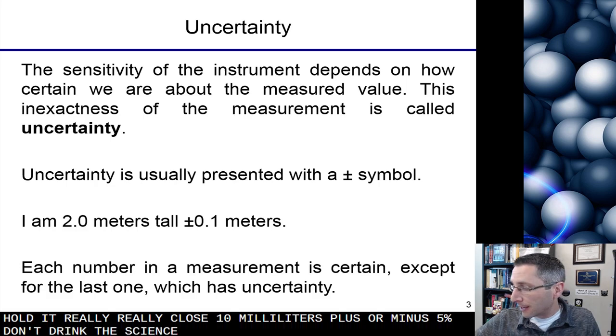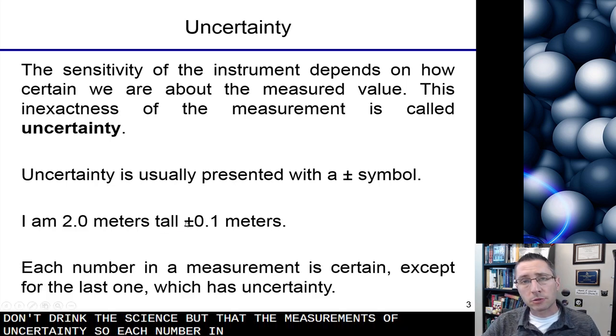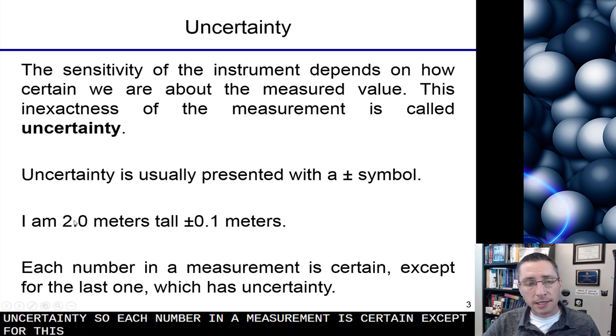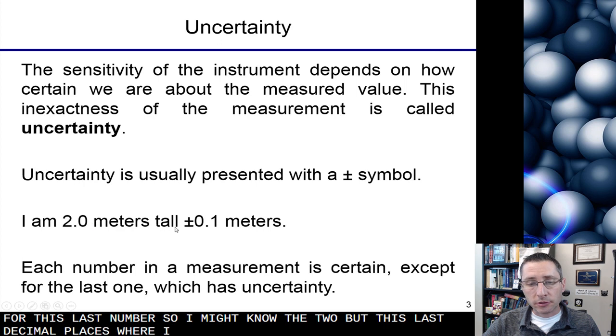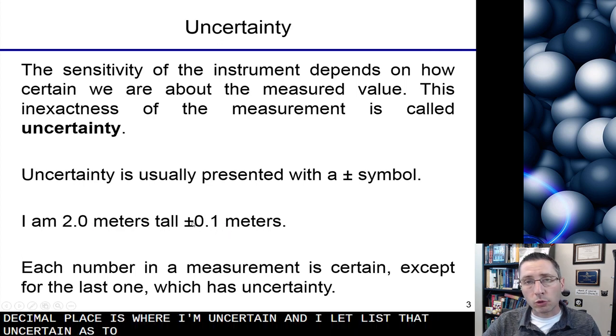Don't drink the science. But that's a measurement of uncertainty. So each number in a measurement is certain, except for this last number. So I might know the two, but this last decimal place is where I'm uncertain, and I list that uncertainty as plus or minus with that necessary unit.